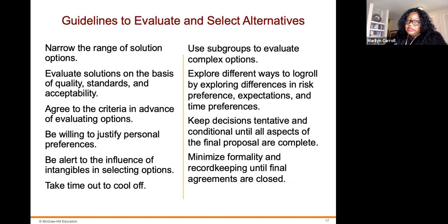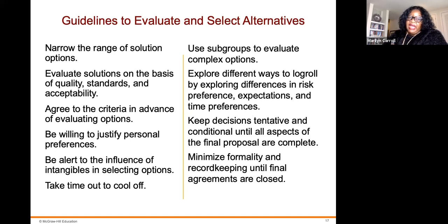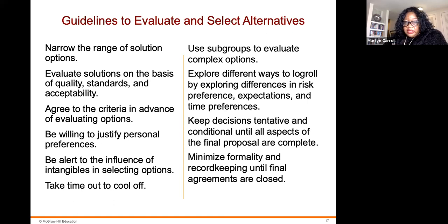Guidelines to evaluate and select an alternative: narrow the range of solution options; evaluate solutions on the basis of quality, standards, and acceptability; agree to the criteria in advance of evaluating options; be willing to justify personal preferences; be alert to the influence of intangibles in selecting options; take time out to cool off; use subgroups to evaluate complex options; explore different ways to log roll by exploring differences in risk preferences, expectations, and time preferences; keep discussions tentative and conditional until all aspects of the final proposal are complete; and minimize formality and record keeping until final agreements are closed.